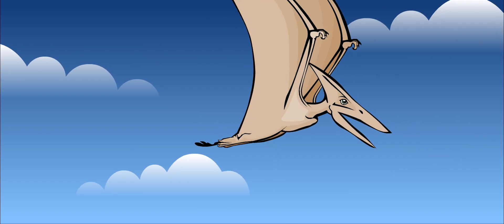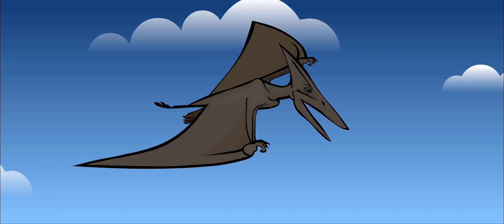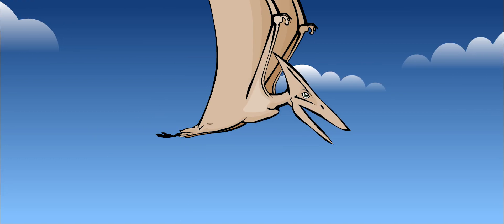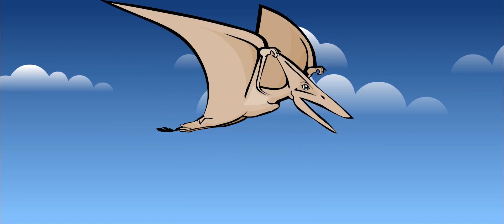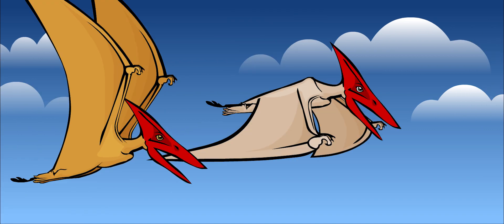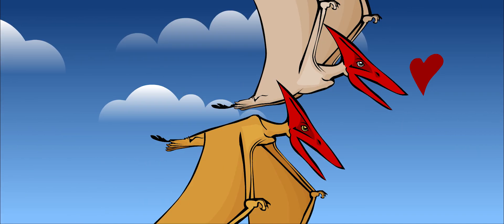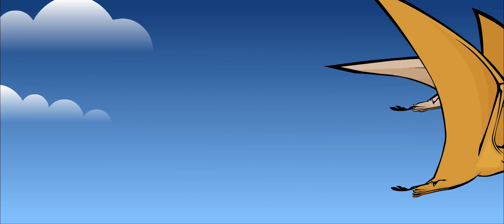Some pteranodons had long, bony crests on their heads. Paleontologists are still not sure what these were used for. They may have helped the creature fly straight, or they might have been large and colorful and useful for attracting a mate. Male pteranodons might have had larger crests than females.